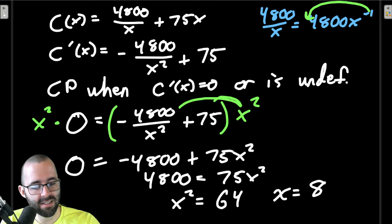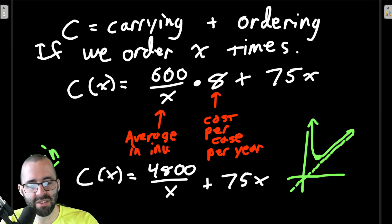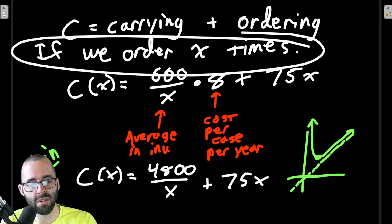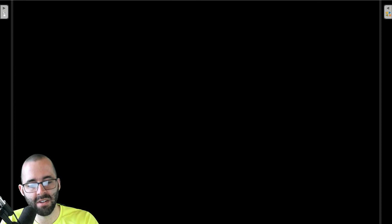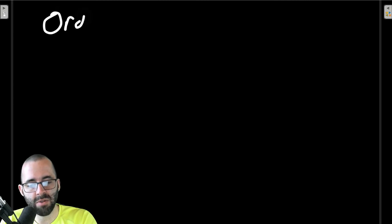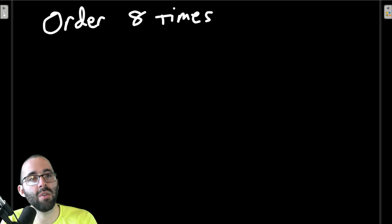We're only going to include the plus 8 here, we're not going to order negative 8 times. So what was x? The number of orders. We should order 8 times.